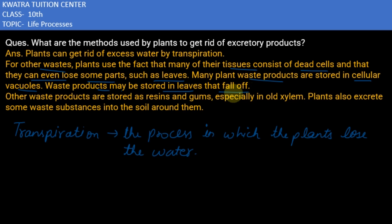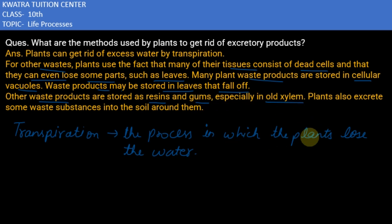Waste products may be stored in leaves that fall off. Other wastes are stored as resins and gums, especially in old xylem tissues. Some remaining waste is released into the soil by the means of roots.